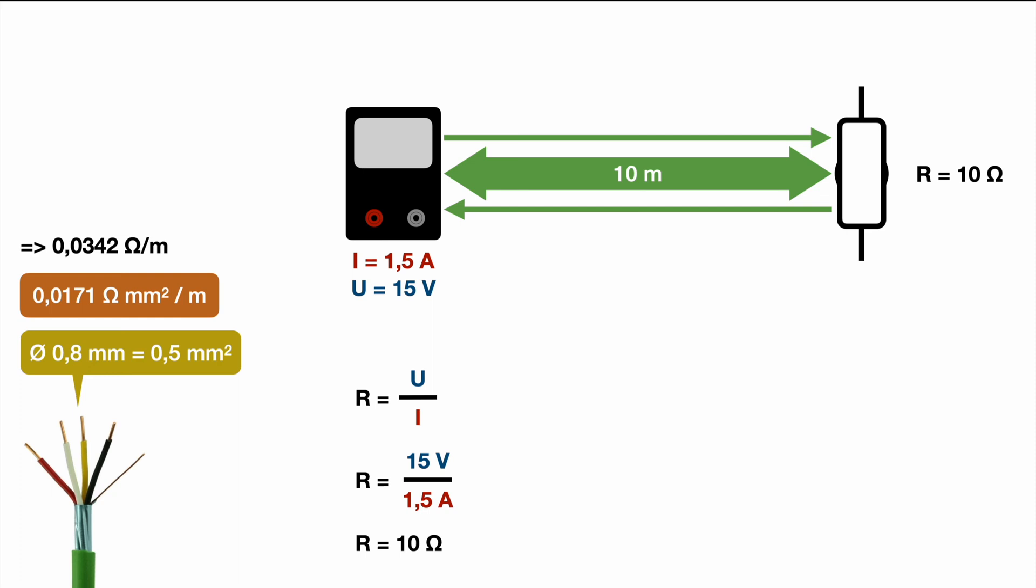But since our measurement current needs to go the whole way, needs to run through the cable, through the resistor and back through the cable, it's actually seeing some more resistors. One on the way from the multimeter to the resistor and one from the resistor back to the multimeter. And those resistors are not real components. It's basically just the resistance of the cable which as you remember is 0.342 ohms for every 10 meters, so 0.684 in total.